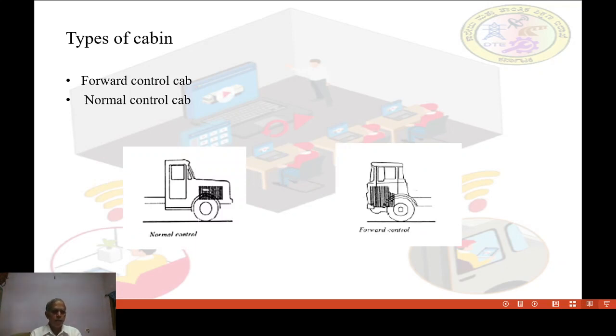Next, types of cabin. Mainly types of cabin are two types: forward control cabin and normal control cabin.